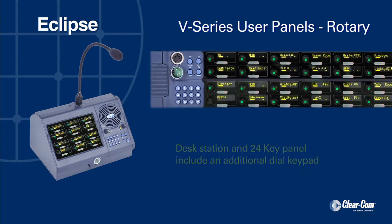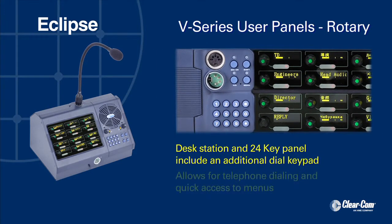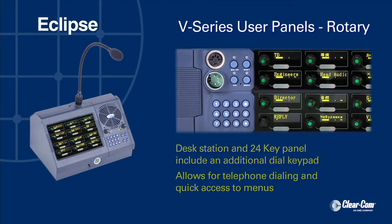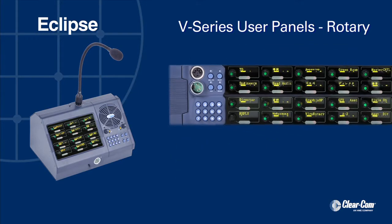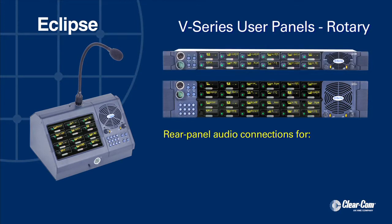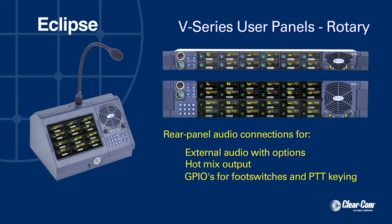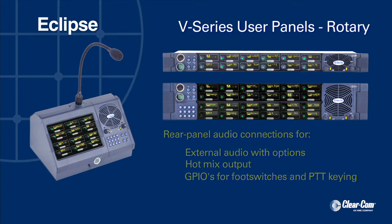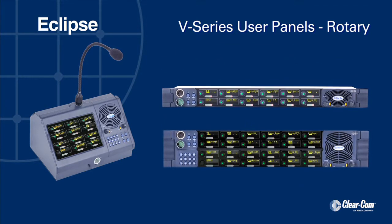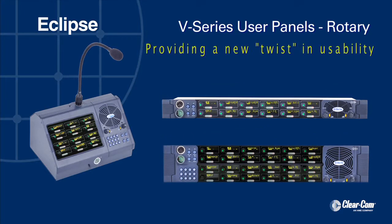A front panel shift key gives user access to eight additional pages. The two rack space and desktop panels also include an additional dial keypad, which allows telephone dialing and quick access to menus. Each rotary user control panel includes rear audio connections for external audio with options, hot mix output, and GPIOs for foot switches and push-to-talk keying. ClearCom V-Series Rotary Panels — providing a new twist in usability.